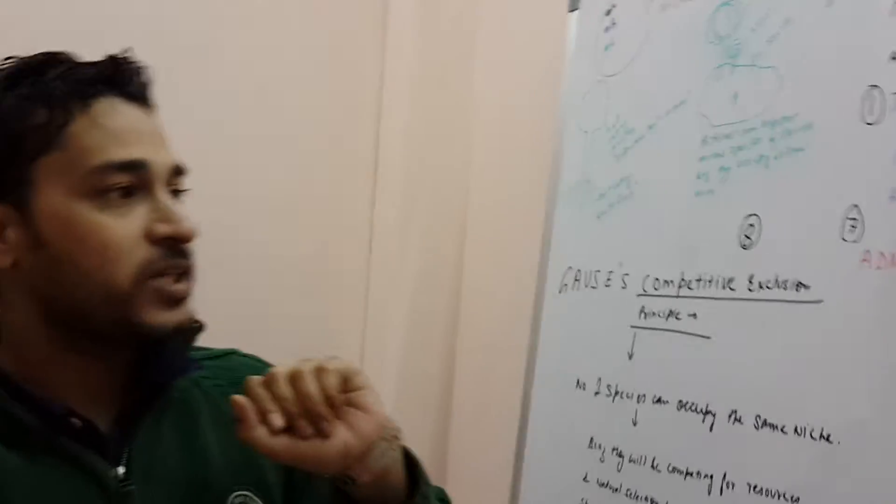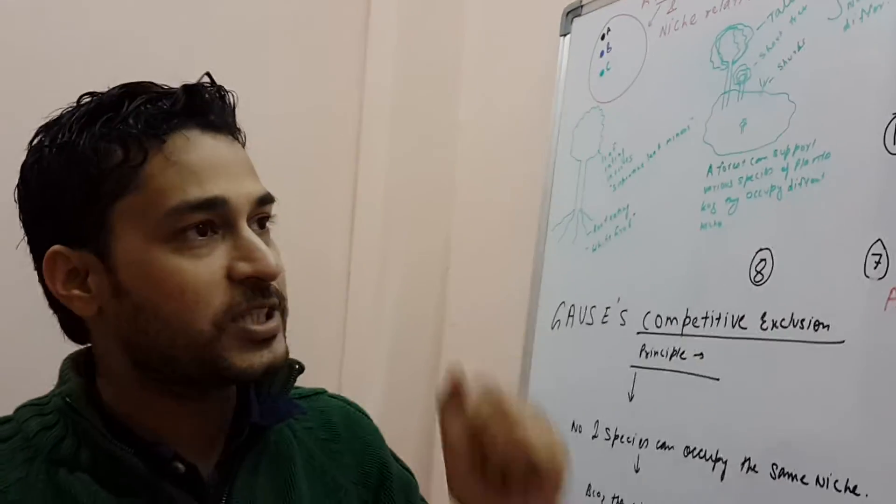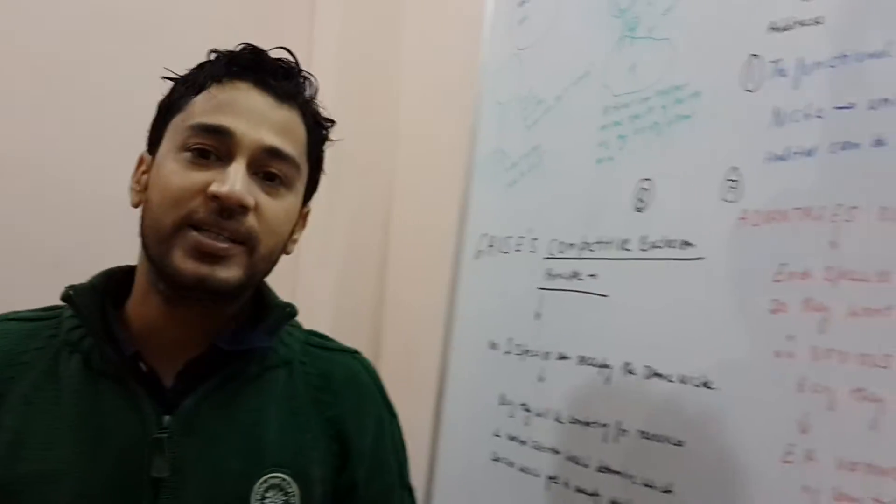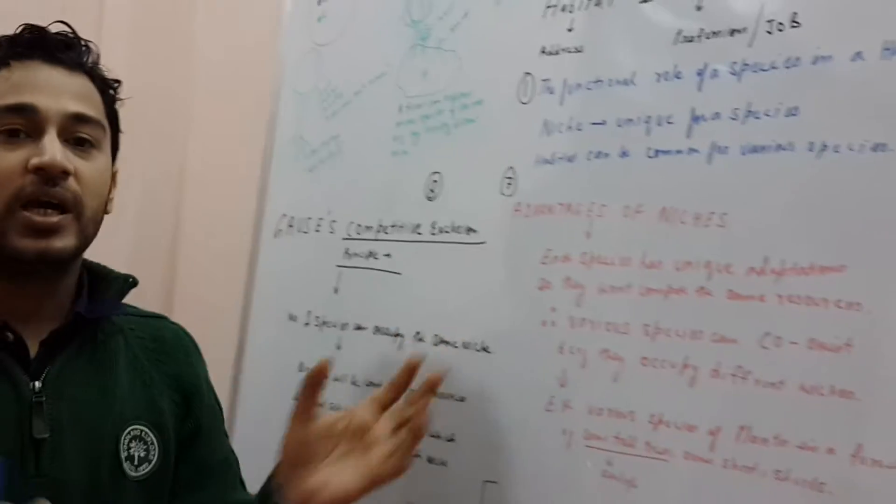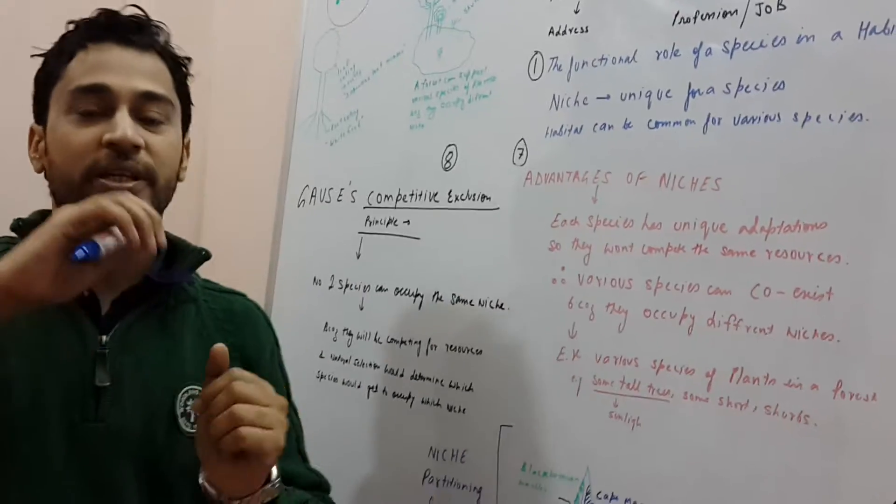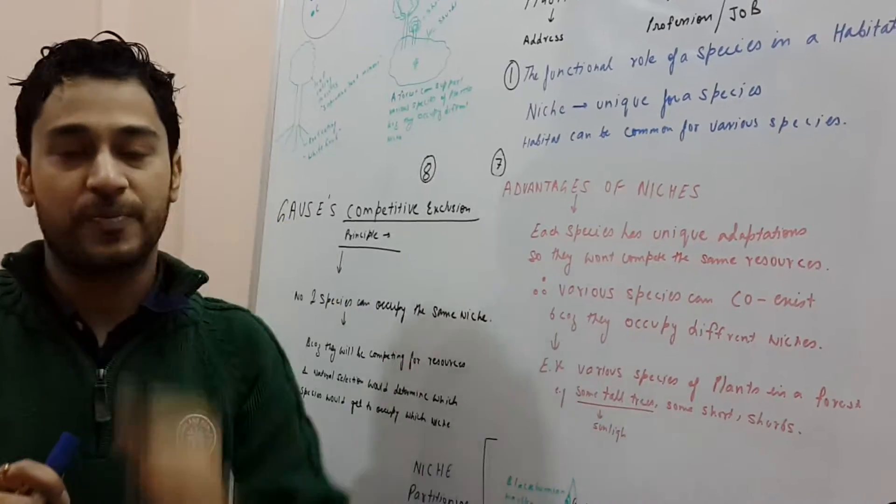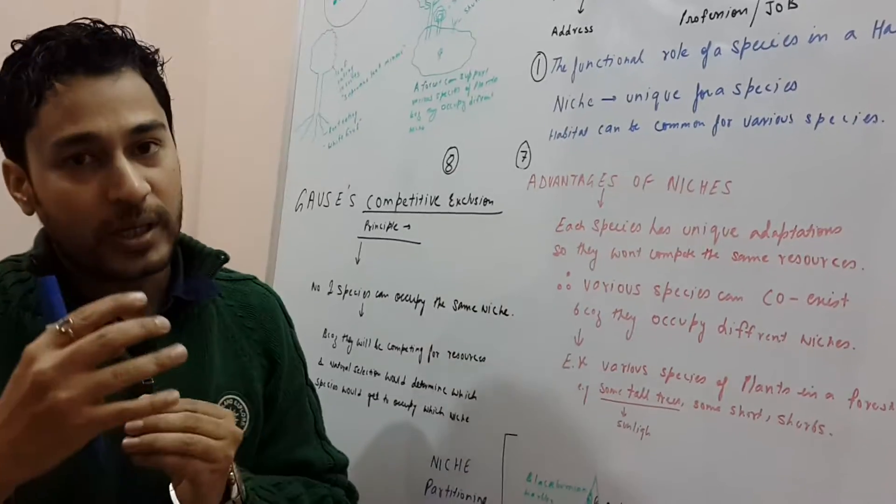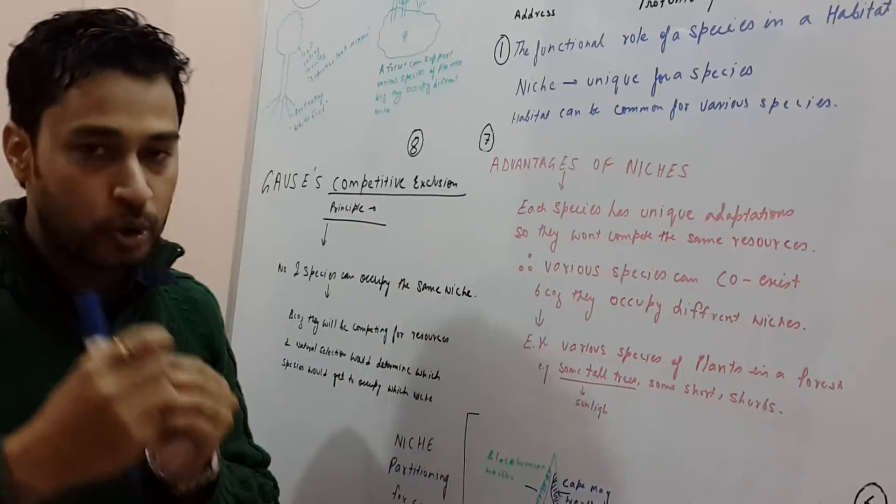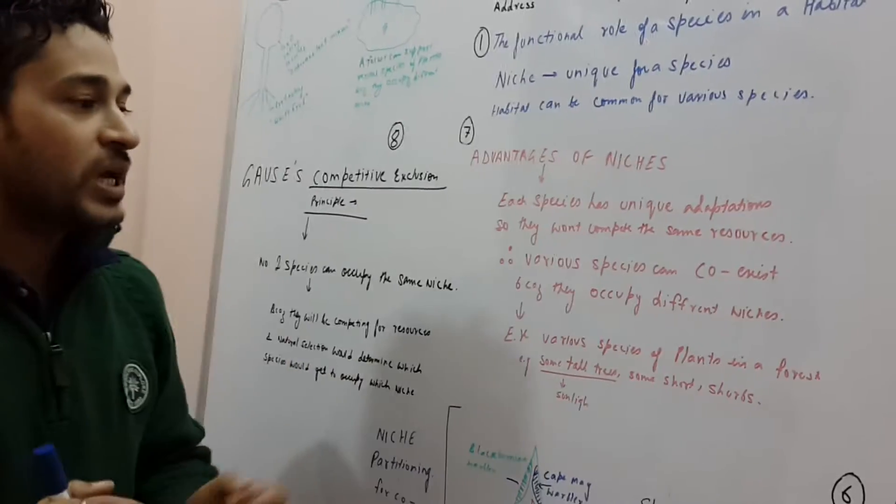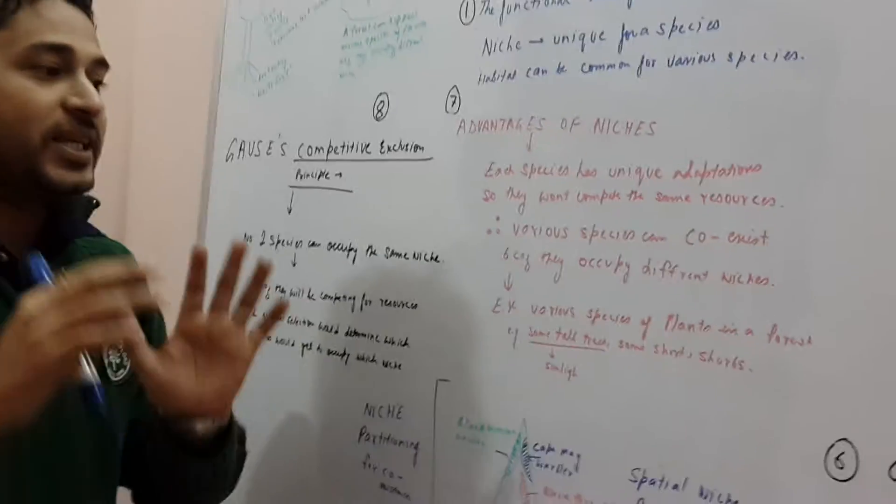Now, from this, I would like to come to another important aspect that what are the advantages of having a niche? See, the niches are important in ecology because each species has its own unique adaptations so that they do not compete for the resources. They would have their own role and they would be busy with their own, so therefore they can easily coexist.